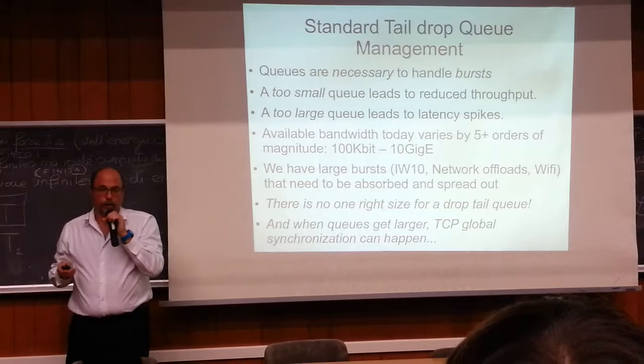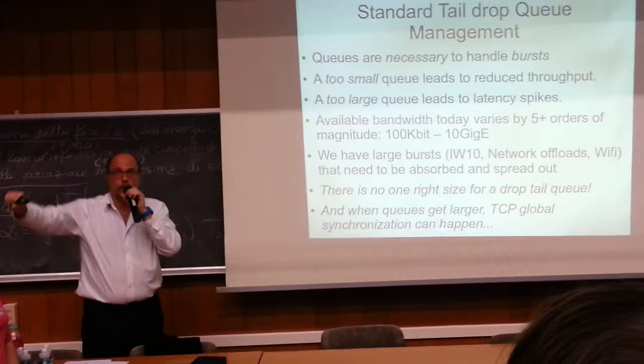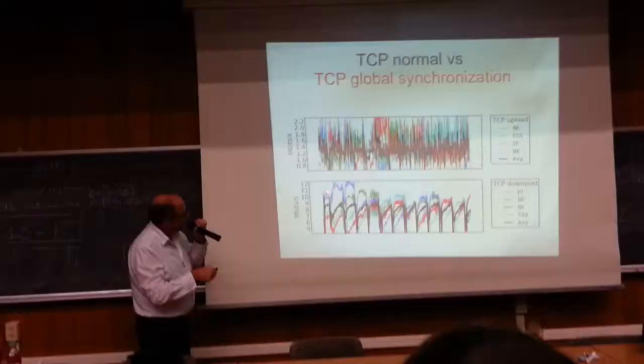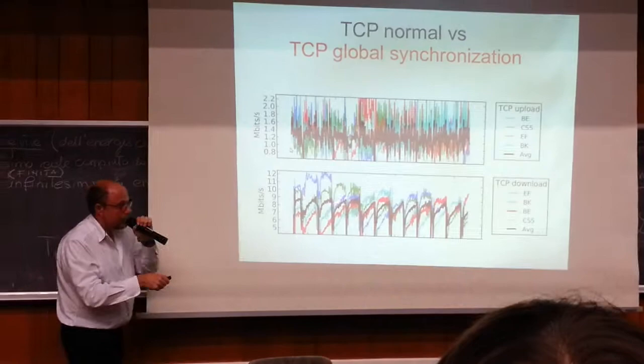What would happen if you had multiple TCPs happening — TCP global synchronization — where so many packets are poured into a large queue that they all collapse simultaneously. This is what TCP global synchronization looks like: all these TCP streams peak and then collapse, peak and then collapse. So the bandwidth that you could otherwise have been using all vanishes, and the utilization of your network is nowhere near as good as it could be.